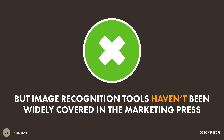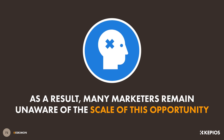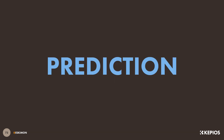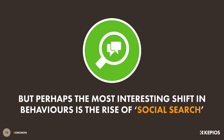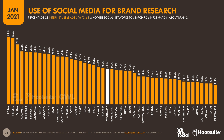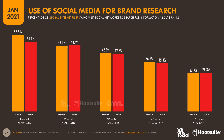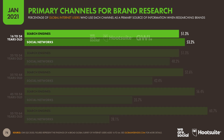Perhaps because use of these tools remains relatively low across many Western countries, image recognition hasn't been widely covered in the marketing press, and many marketers remain unaware of the size or the scope of this opportunity. My analysis suggests that these tools will become increasingly important in e-commerce, especially when it comes to products in highly aesthetic categories like fashion, home furnishings and even consumer electronics. But perhaps the most interesting shift in people's online search behaviours relates to the rise of social search. Globally, almost half of all internet users now say that they turn to social networks as a primary destination when they're looking for information about brands and products they're thinking of buying. And those Gen Z users now say that they're more likely to turn to social media to research products and services than they are to do so using a search engine.